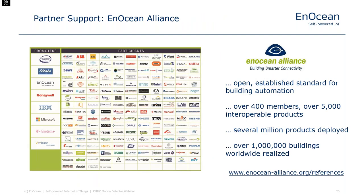Within the EnOcean Alliance, we work with a number of key partners including large companies such as IBM, Microsoft, T-Systems, Virtuos by Angie, and recently Aruba — an HP company making wireless access points — has also become a member. We also work with specialized building automation companies such as Eltako, Honeywell, BSC, ABB and others.